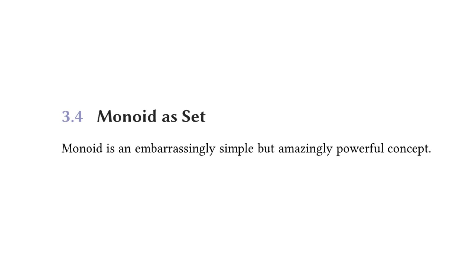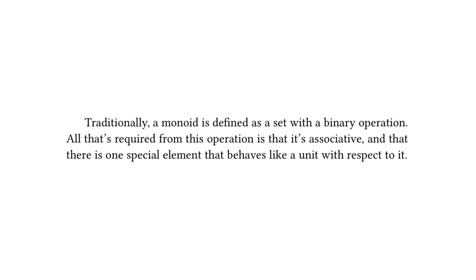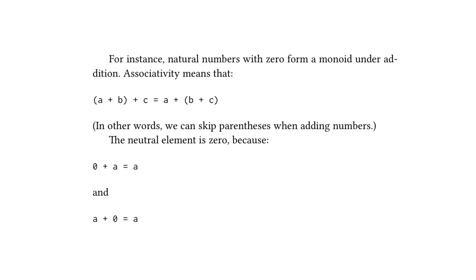Moving on to monoids. So this is probably the most interesting part of this chapter for me, because I've heard quite a bit about monoids from previous talks, which we're going to see clips from. So the text reads, monoid is an embarrassingly simple, but amazingly powerful concept. The text goes on to read, traditionally, a monoid is defined as a set, with a binary operation. All that's required from this operation is that it's associative, and that there is one special element that behaves like a unit with respect to it. And they go on to give the example of the following, for instance, natural numbers with zero form a monoid under addition. Associativity means that a plus b in parentheses plus c is equal to a plus b plus c in parentheses. In other words, you can skip parentheses when adding numbers. And the neutral element is zero because zero plus a is equal to a and a plus zero is equal to a.